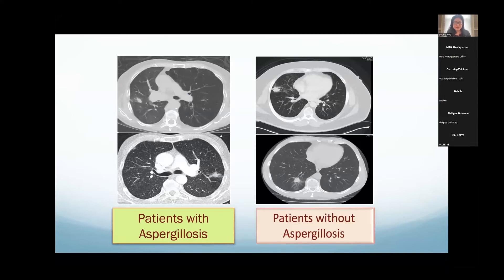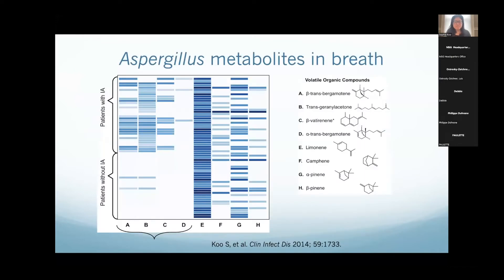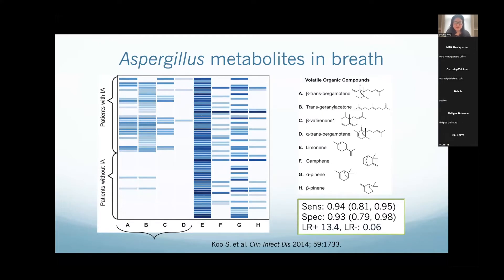On the left are two patients we sampled who had aspergillosis, and on the right are two without aspergillosis — in all of these, the radiologist said this person definitely has aspergillosis. When we aligned these patients using their metabolites, we found that in patients with aspergillosis, the smaller monoterpenes and diterpenes weren't really predictive. Limonene, for example, is universally present in everybody. But the larger secondary metabolites — beta-transbergamotene, alpha-transbergamotene, and some oxidized sesquiterpene products — were very predictive of aspergillosis, with a sensitivity of 94%, specificity of 93%, a positive likelihood ratio of 13.4, and a negative likelihood ratio of 0.06.